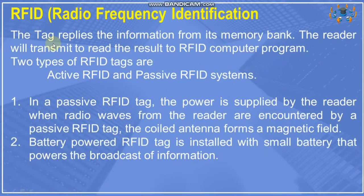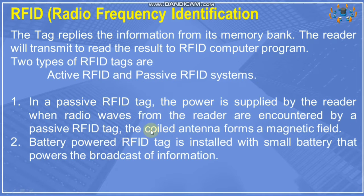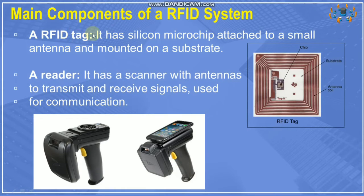RFID tags are of two types: active and passive. For passive RFID, the power is supplied by the reader — when radio waves from the reader are encountered by a passive RFID tag, the coiled antenna forms a magnetic field. A battery-powered active RFID tag is installed with a small battery that powers the broadcast of information. The main components of RFID systems are a reader, a tag, and a controller.